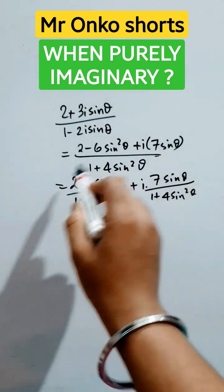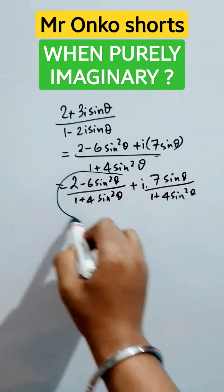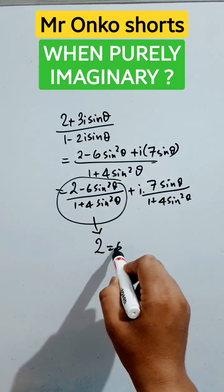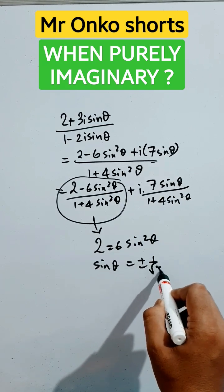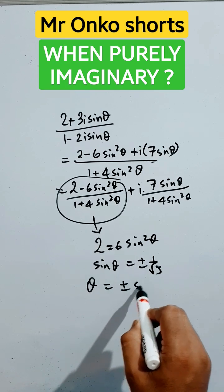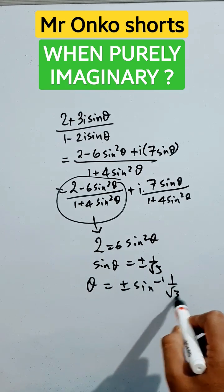If it is purely imaginary, then the real part will be zero. So 2 equals 6 sin squared theta, giving sin theta equals plus or minus 1 over root 3. Therefore, theta equals plus or minus sin inverse of 1 over root 3.